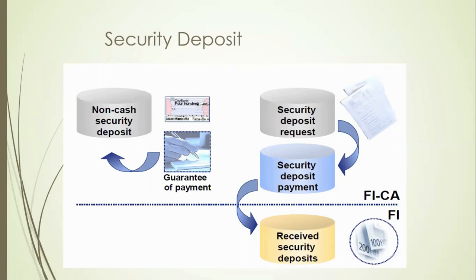Non-cash, as I mentioned, is a guarantee — it's a bank guarantee. That will directly go to the bank, and if there will be any request, it will come to the FICA as a received security deposit. So mostly, this non-cash security deposit, which is a bank guarantee, we do not do the interest calculation, because it's just a guarantee from a bank. The interest calculation will be done by that bank only.